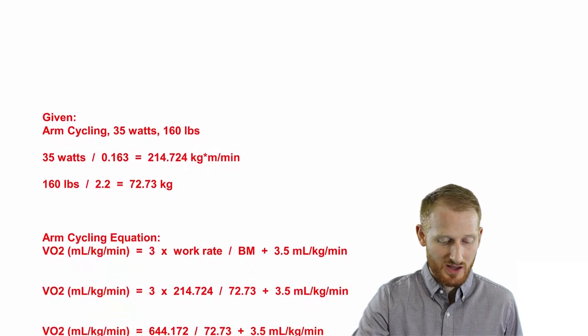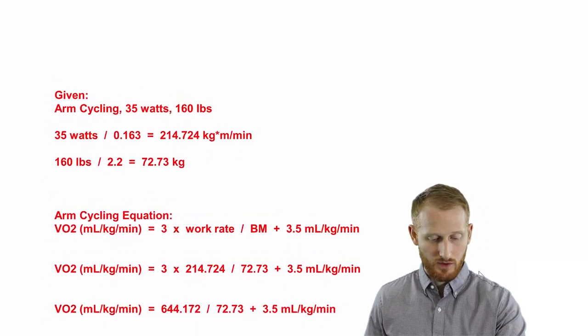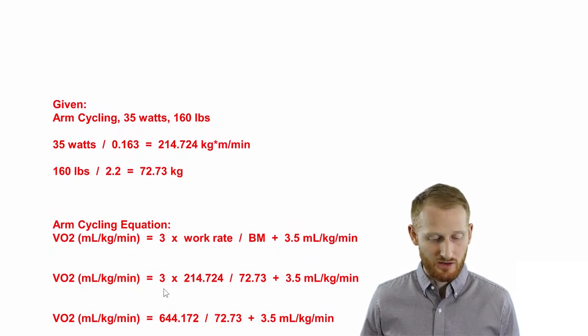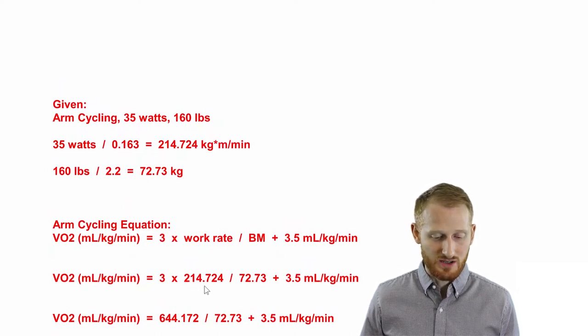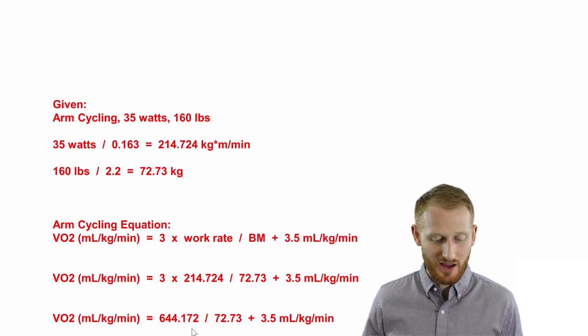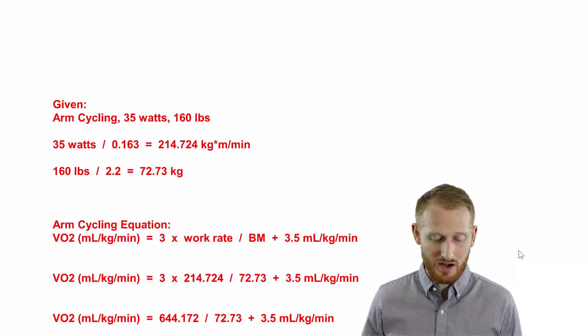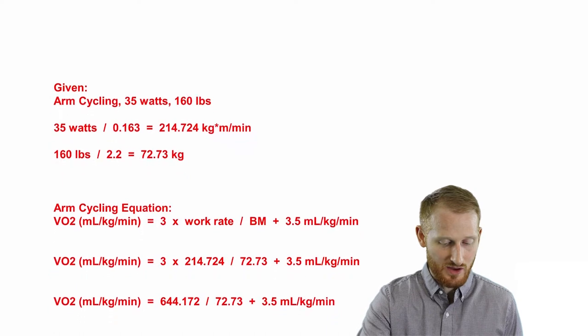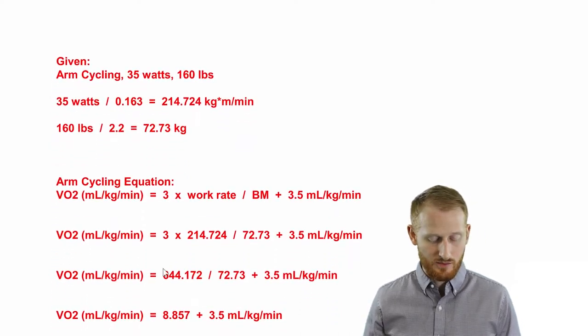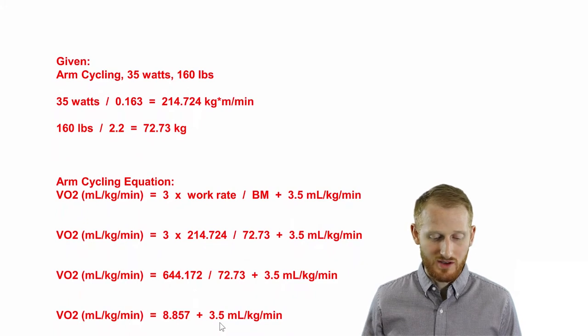So let's start off by doing the first part of this. So the three times 214.724 will give you 644.172. The next thing I'm going to do is divide that value by his body mass, and that's going to end up giving us 8.857,